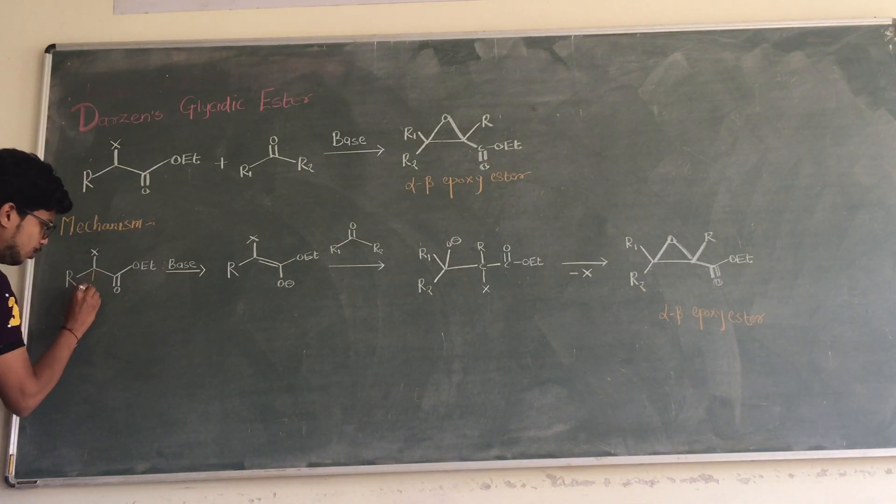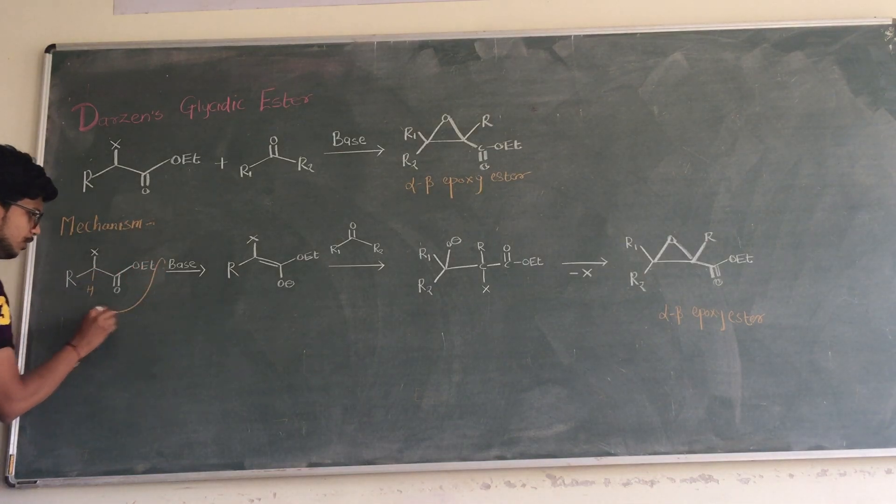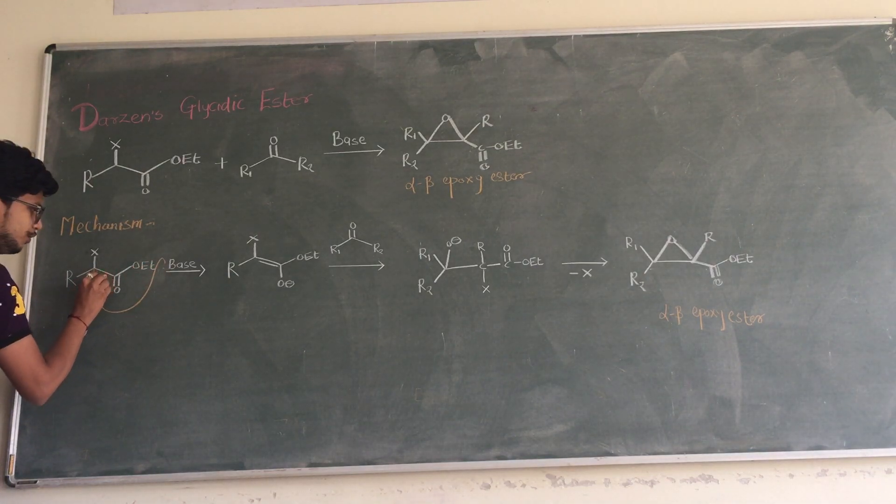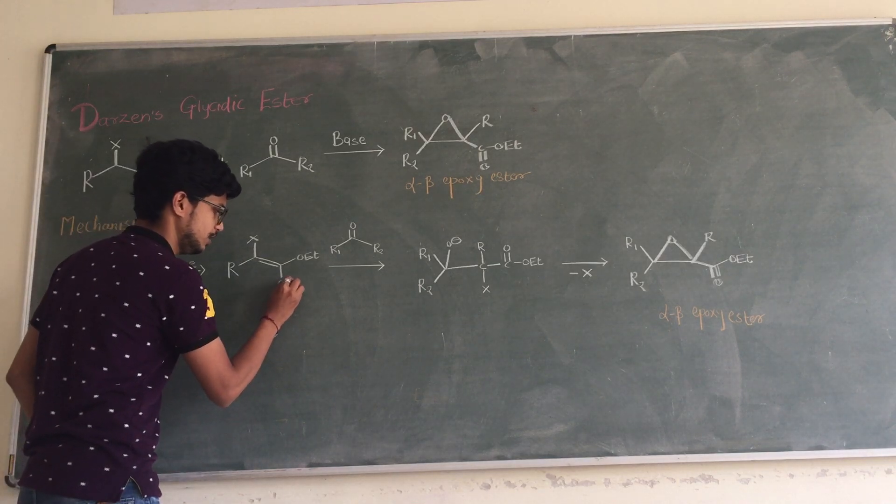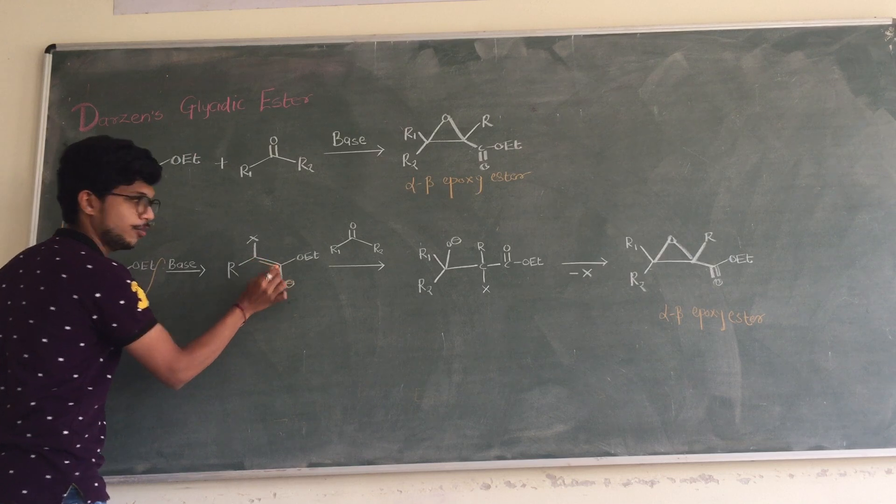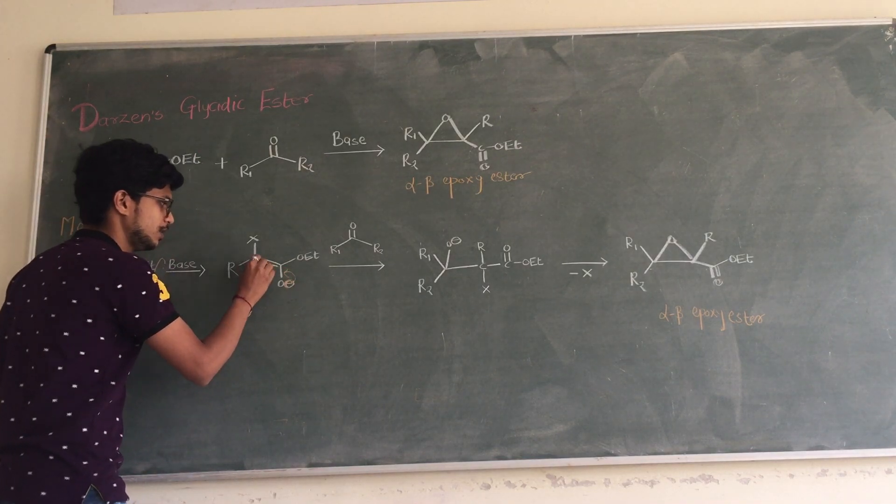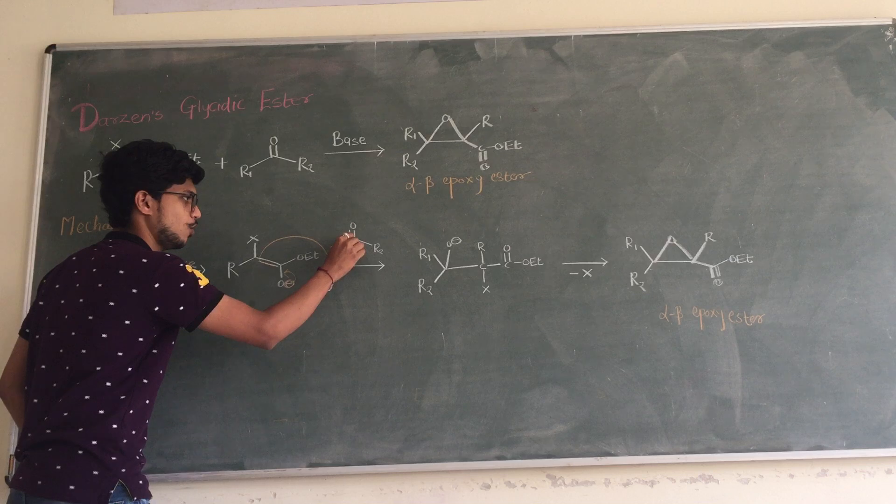The base abstracts hydrogen from the alpha position. The bond shift occurs here and oxygen gets a negative charge. Formation of a double bond occurs when this negative charge is stabilized.